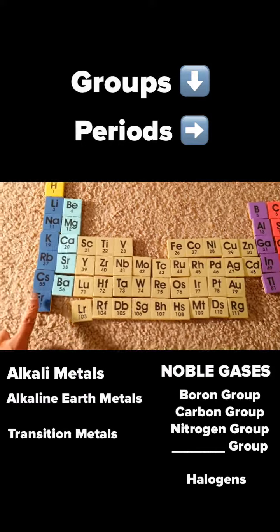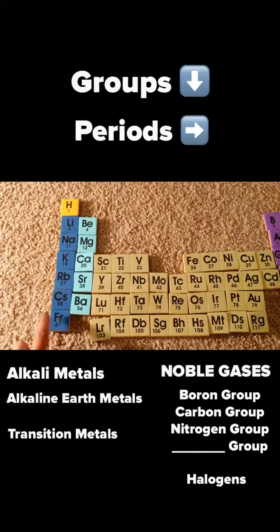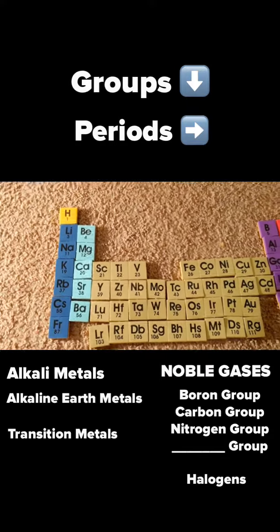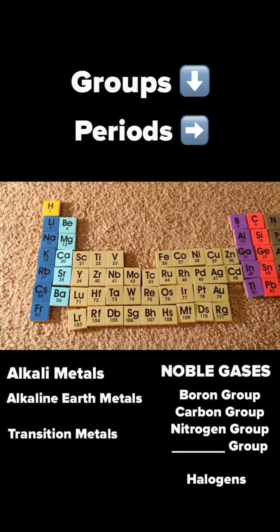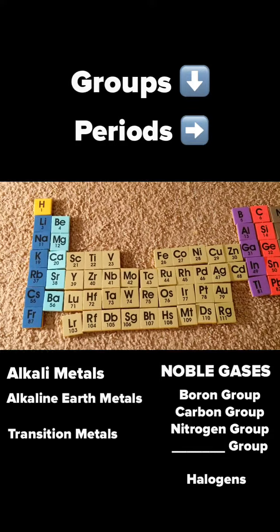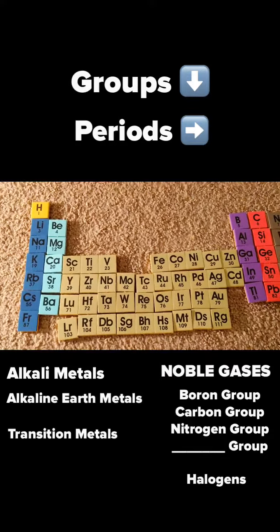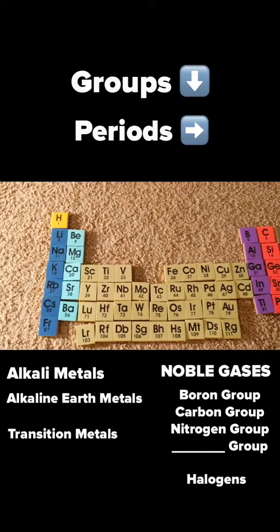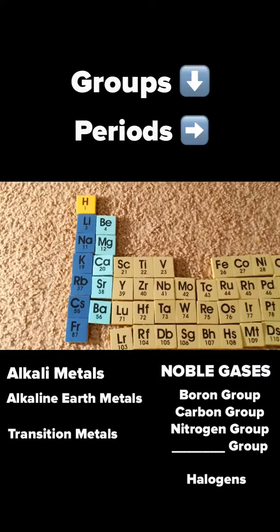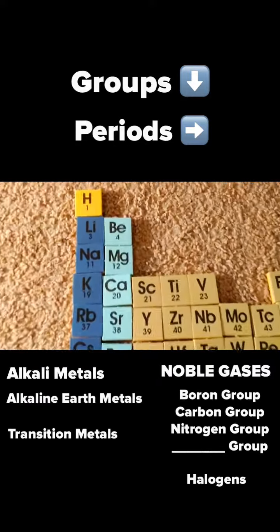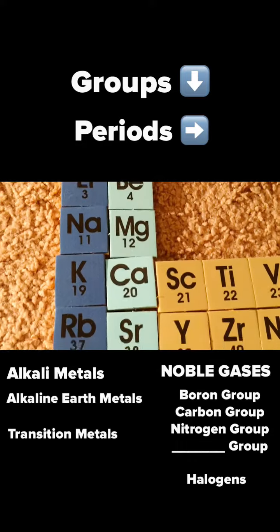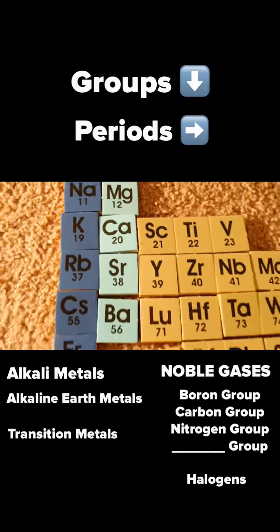For instance, this blue group here — group one — these elements are the alkali metals. These metals are the most reactive of all metals. And you see someone there that you are familiar with: sodium.